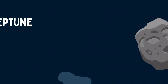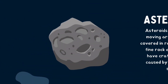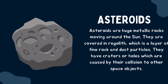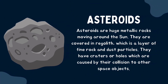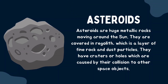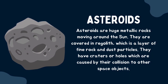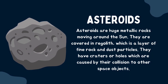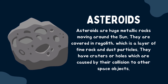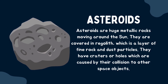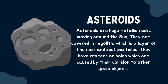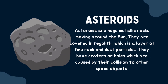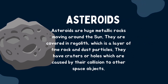Now let's learn about asteroids. Asteroids are huge metallic rocks moving around the sun. They are covered in regolith, which is a layer of fine rock and dust particles. They have craters, or holes, which are caused by their collisions with other space objects, as you can see in this photo.